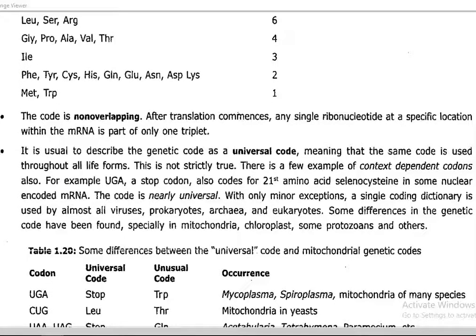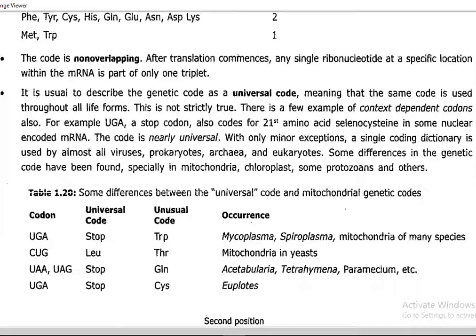The genetic code is nearly universal; however, it does not operate identically in all living organisms — there are certain small changes. For example, UGA codes for a stop codon universally, but codes for tryptophan in mycoplasma, spiroplasma, and mitochondria of several species. The other two stop codons, UAA and UAG, act as stop codons universally, but code for glutamine in Acetabularia, Tetrahymena, and Paramecium — certain unicellular organisms where these codons serve as glutamine-coding codons during translation.